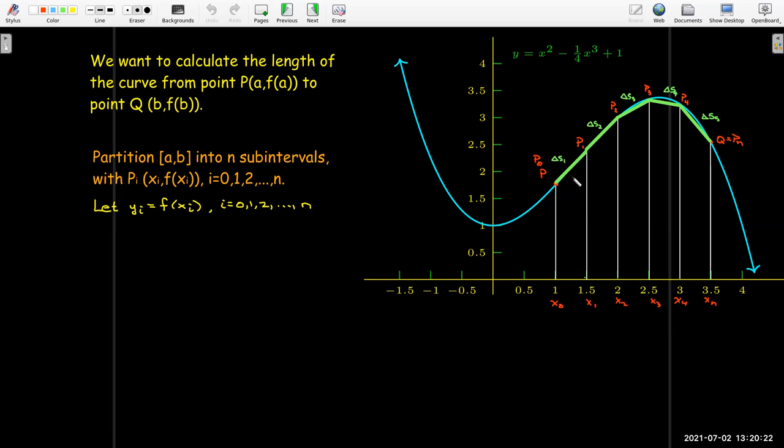Now each line segment I would use the distance formula to calculate the approximate length of that portion of the curve. So delta S_i will be the length of the distance from point p_(i-1) to p_i, just the length of that line segment, and we'll use the distance formula for that.